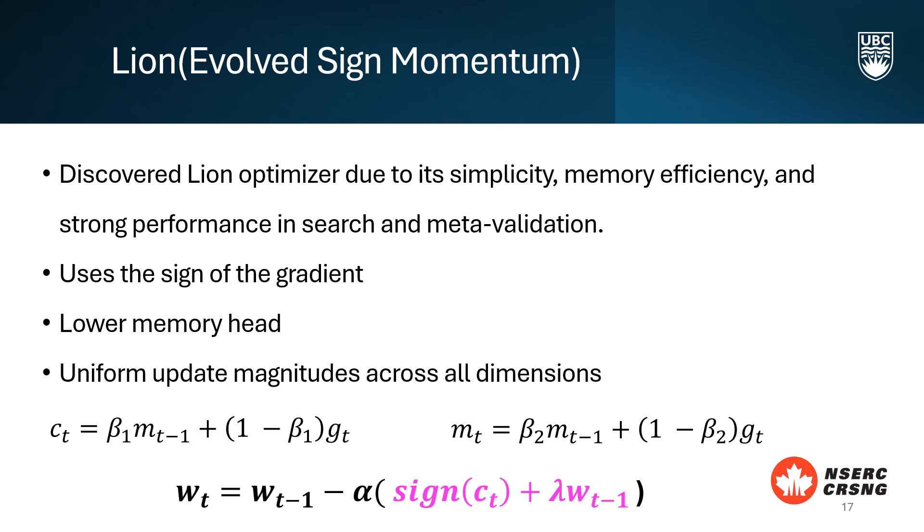LION's unique approach involves using the sign of gradient rather than directly using momentum to make updates. By taking the sign operation, LION ensures that the updates have a uniform magnitude across all dimensions and use less memory.